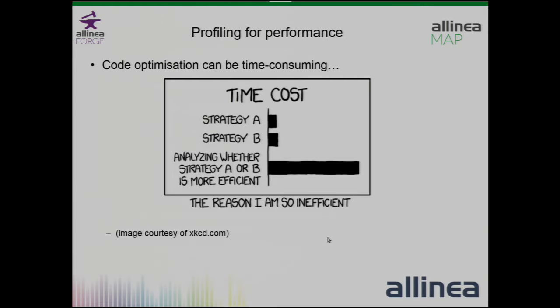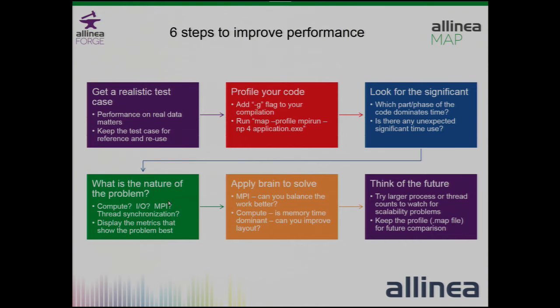I'll start by talking about performance profiling. Code optimization can be time consuming, and we don't want to spend too long analyzing whether strategy A or strategy B is the right one. I always think it's important to use a realistic test case. Creating a small computational kernel is important to understand some aspects of performance, but if you're looking at the whole picture of an HPC code running with IO and MPI, you can't beat having something that looks like a real data set in terms of its size and shape.